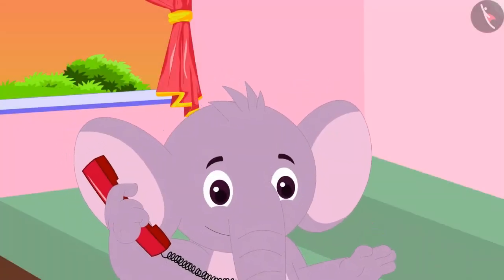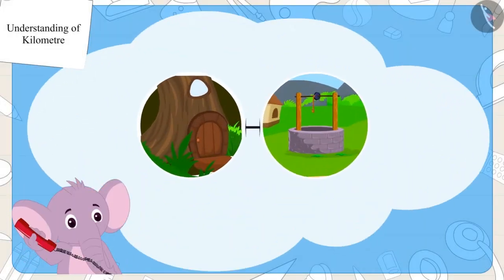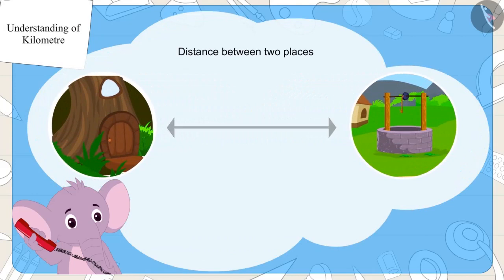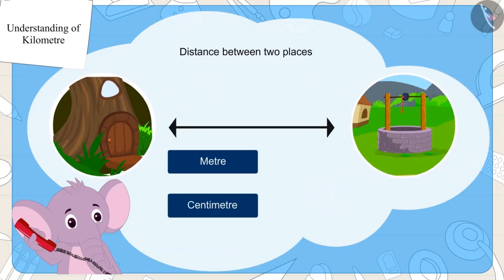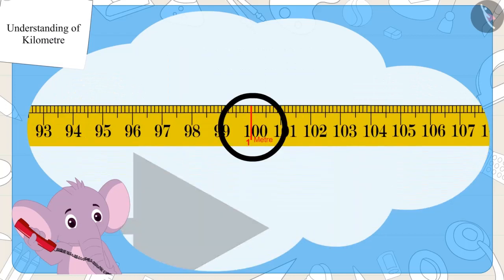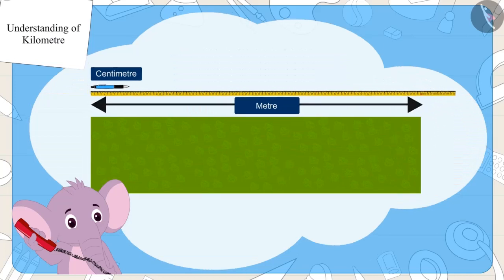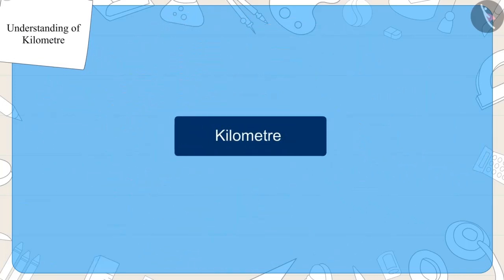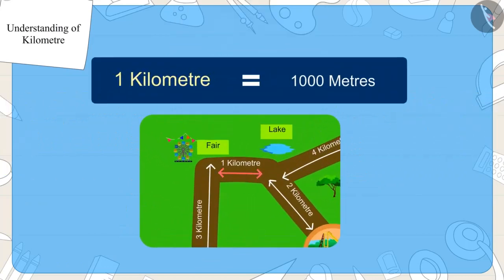Appu explained it to Chanda. Look Chanda, since the distance between the two places is a lot, we cannot measure them in centimeters or meters. Centimeters and meters are units of measuring length. Similarly, kilometers is the unit to measure the distance between two places. One kilometer is equal to 1,000 meters.